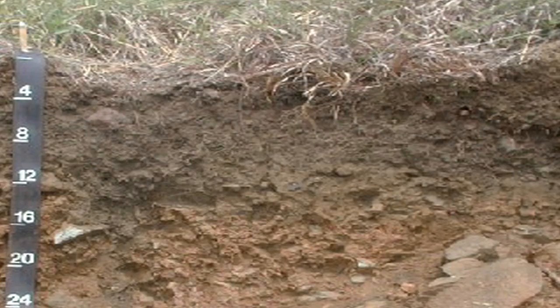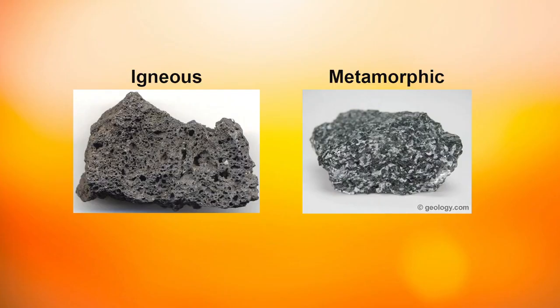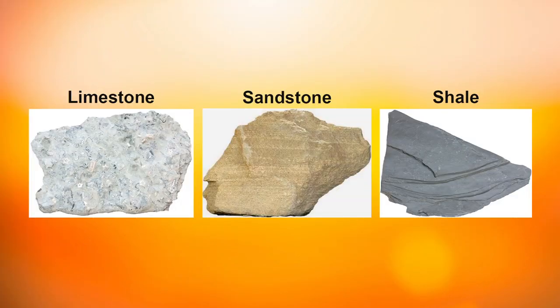Residual refers to the residual material resulting from the weathering of the various rock types across the state. In the Piedmont, we've got the igneous and metamorphic rocks that give rise to certain kinds of soils. And in the Appalachian region, we've got the sedimentary rocks that give us basically limestone, sandstone, shale, and those kinds of parent materials.